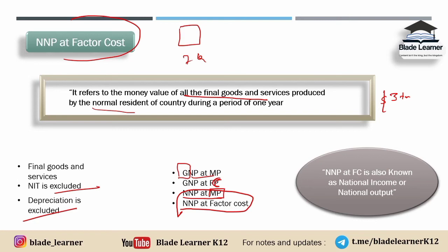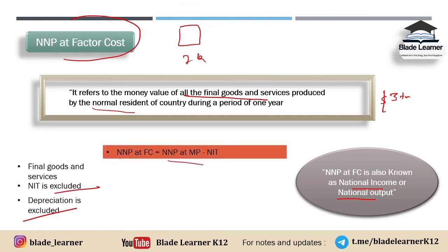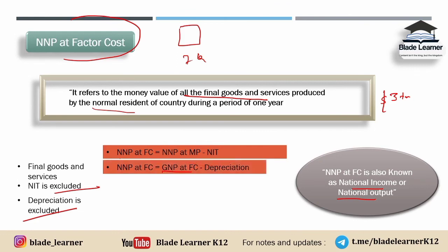Isliye NNP at factor cost ko hi national output ya national income kehte hain. National output aur national income ek kaise ho sakte hain — yeh aage ki videos mein dekhenge jab national income aur domestic income padhenge, tab pata chalega ki output and income are the same. Ab agar formulas pe jaayein: NNP at FC nikalne ke liye — sabse basic formula — agar aapke paas NNP at MP diya hua hai, toh usme se NFIA exclude karo. MP se FC mein aane ke liye NFIA hatao. Aur agar GNP at FC diya hua hai, toh FC se FC pe hi aana hai — NFIA ka koi kaam nahi — bas depreciation hatao.